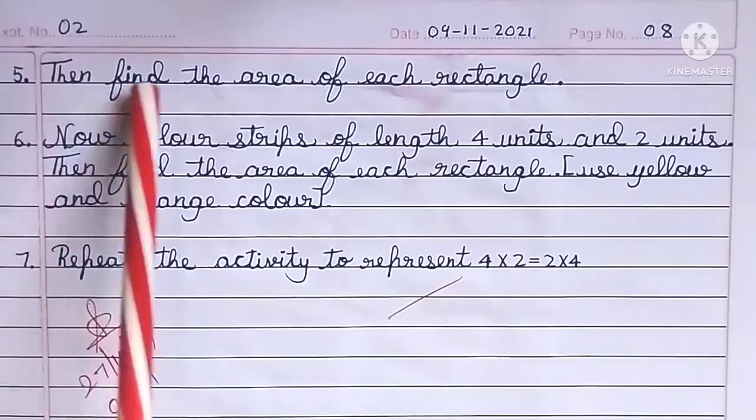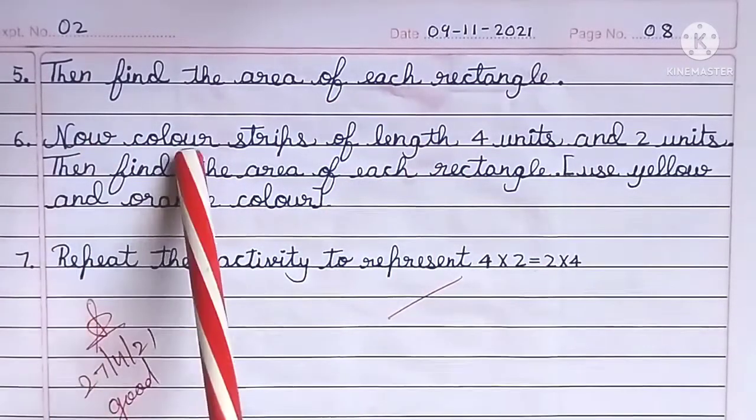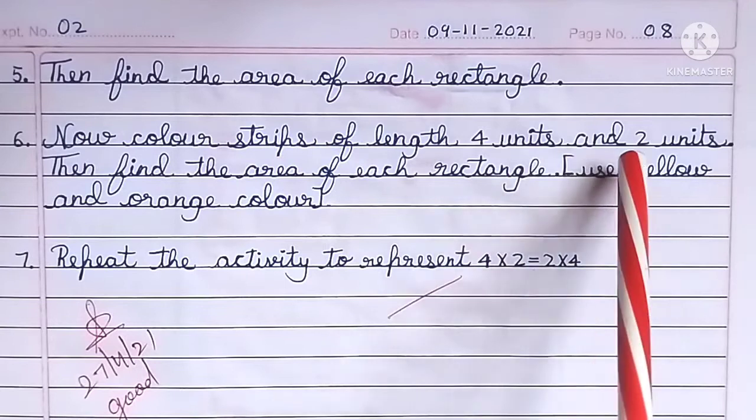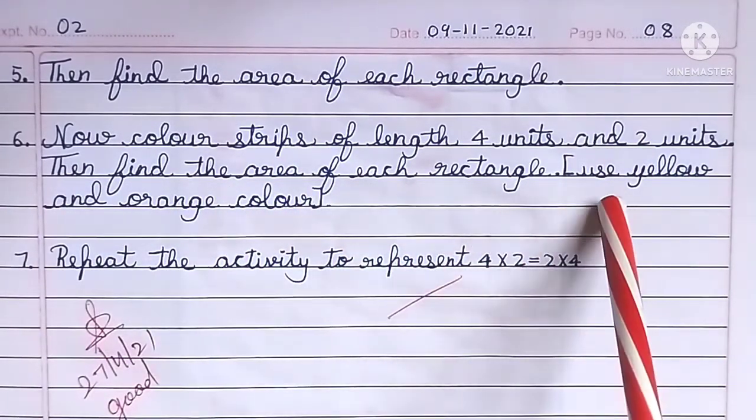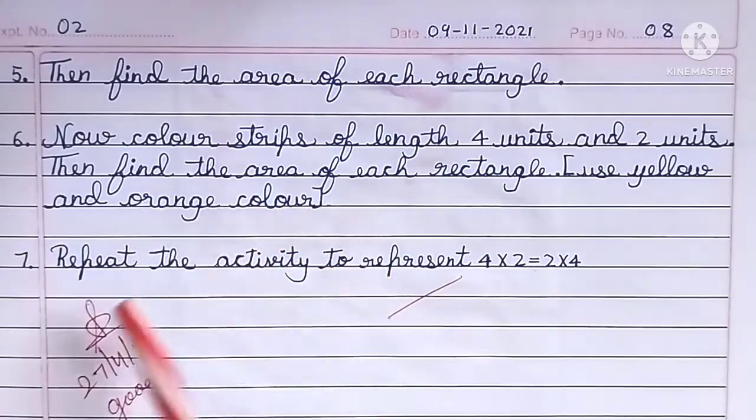Find the area of each rectangle. Now cut out strips of length 4 units and 2 units. Use yellow and orange color to shade them and form rectangles.